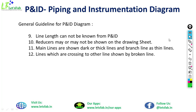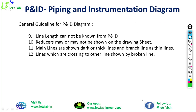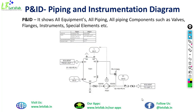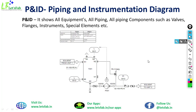In the P&ID diagram, line length cannot be known from the P&ID — whatever pipeline length is connected, we cannot measure it from the P&ID. We have to go to some other drawings to get the length of a particular line. Reducers may or may not be shown on the drawing sheet. Main lines are shown by dark or thick lines and branch lines as thin lines. Lines that cross other lines should be shown by a break — if a line crosses another, it should break at the crossing and then continue. This is all about the P&ID diagram, which is the most important drawing from the perspective of project management and fabrication engineering.